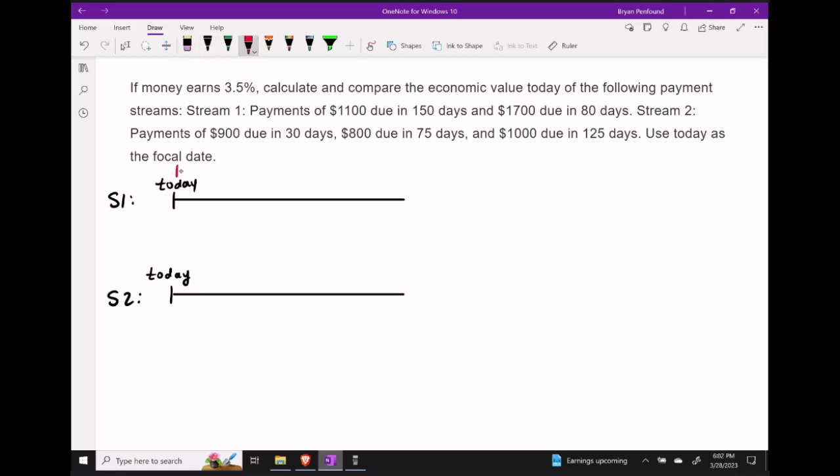Recall that we want today as the focal date, so I'm marking that with a red star. For payment stream number one, we have a payment of $1,700 due in 80 days and a payment of $1,100 due in 150 days.